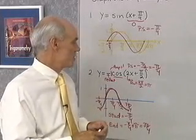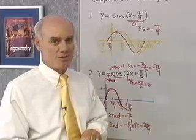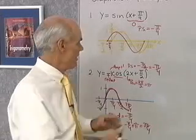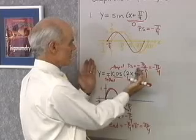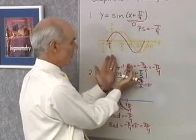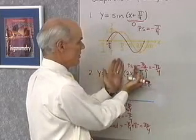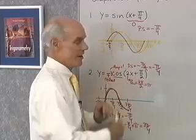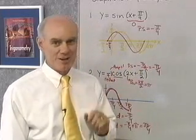Put all those things together — it's a pretty easy way to graph this fairly complicated-looking function, just by knowing what the two coefficients do and what the constant term does. Let's try one more.